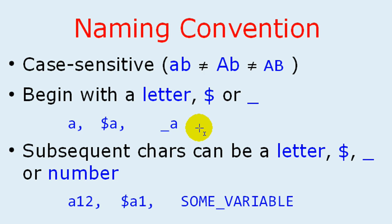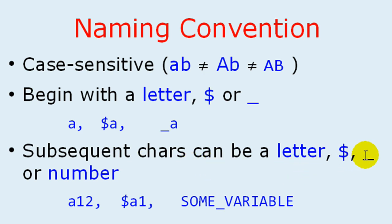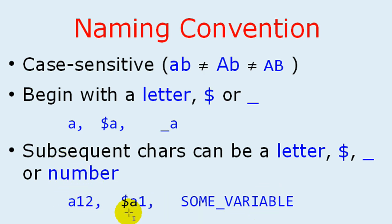So it can start with any of these — a letter a to z. The last rule is that subsequent characters can be a letter, dollar, underscore, or a number. And here are a few valid examples.